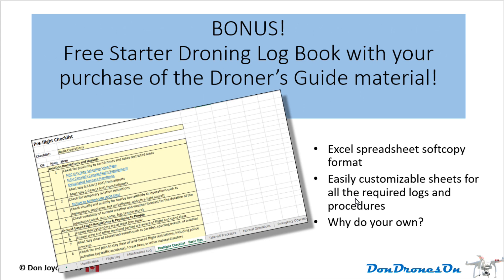This will be an Excel spreadsheet in a soft copy format with multiple tabs, each tab chock full of starter information for each and every one of the identification, logging, and procedural items that are required in the new regulations. Each of these spreadsheets is easily modifiable or customizable so that you can have it adapted to your own kind of operations, your own drones, and so on. You can do all this on your own, of course, but why bother? Just take mine.